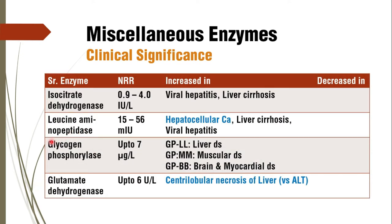Coming to the next enzyme, glycogen phosphorylase. There are three isoenzymes: GPLL — glycogen phosphorylase liver; MM — muscle; and GPBB — brain and myocardial disease. In case of liver disorders, individual isoenzyme studies can give you a better picture of confirmation.